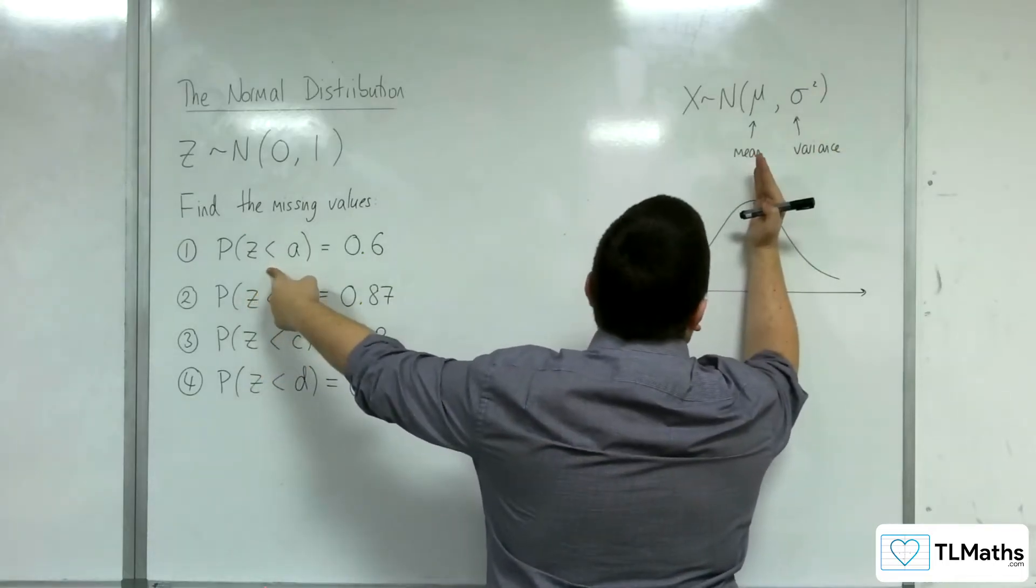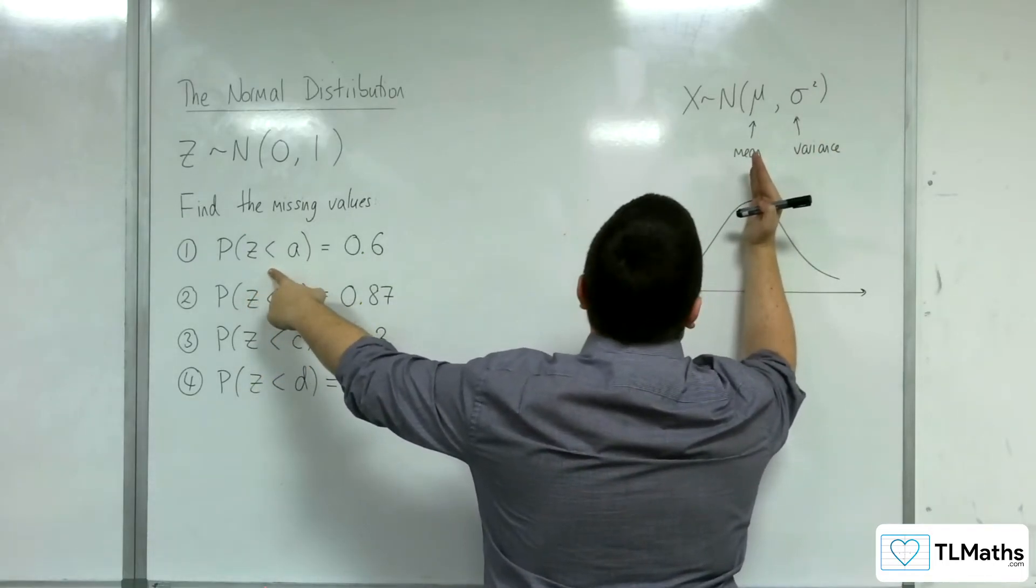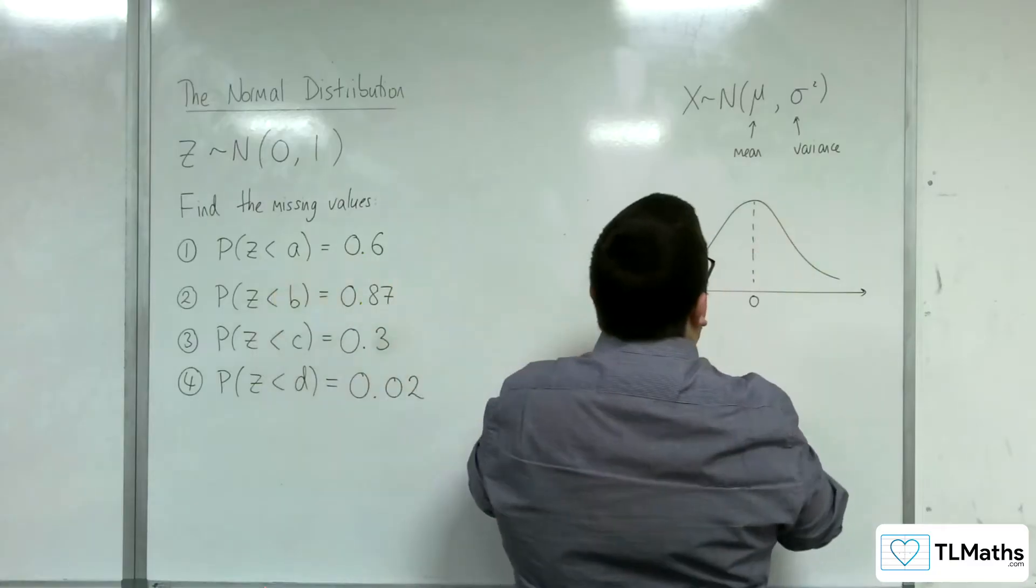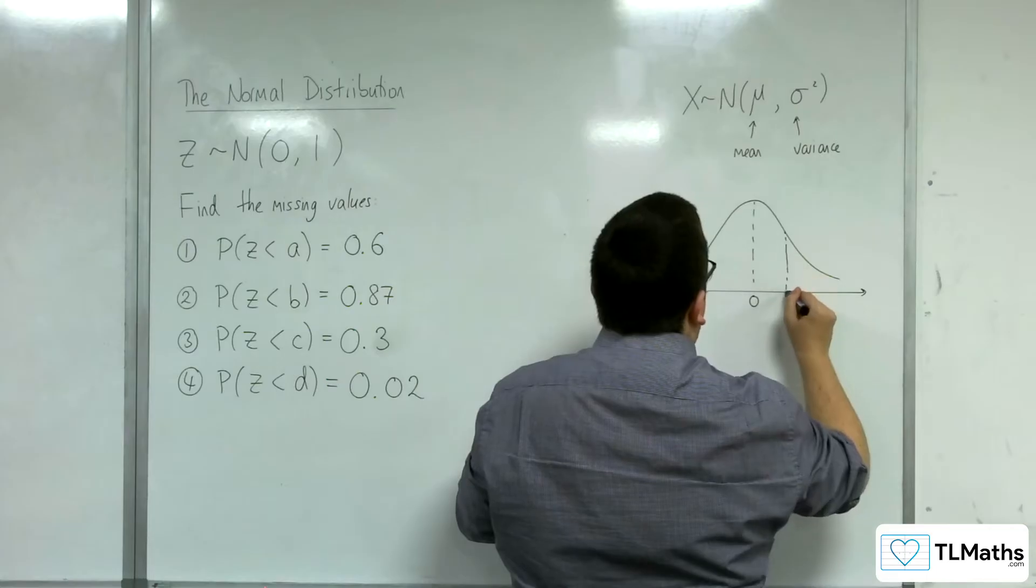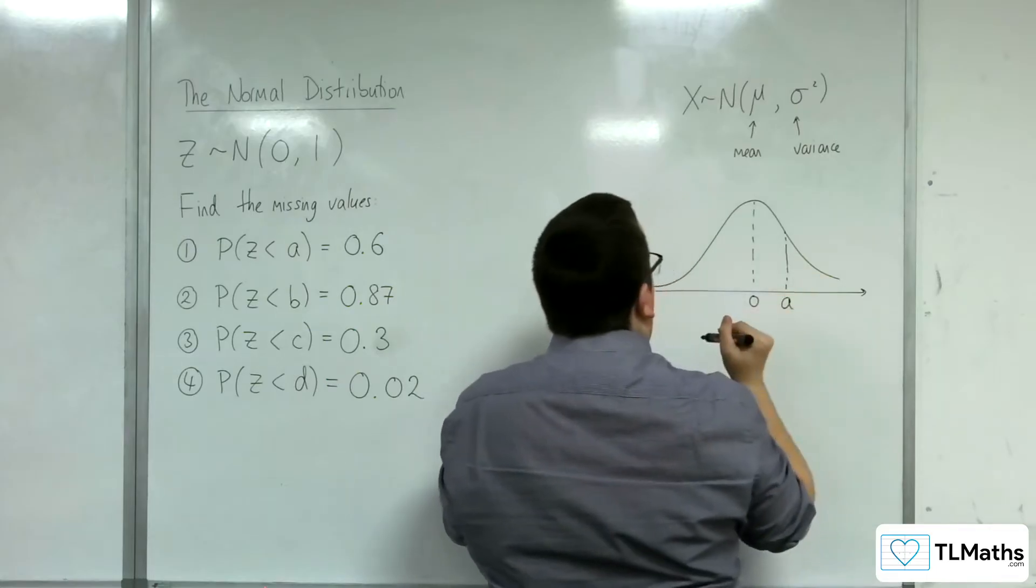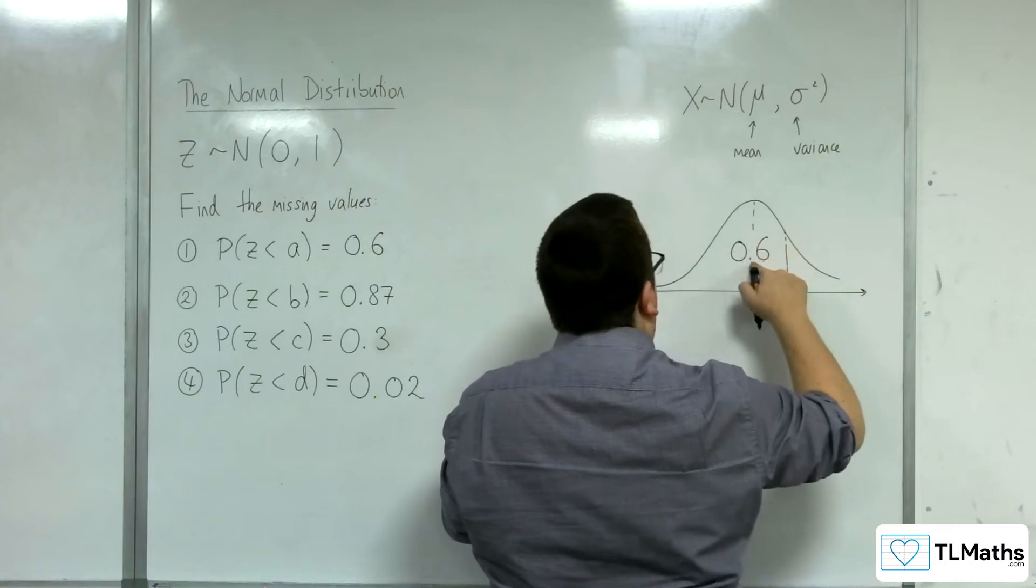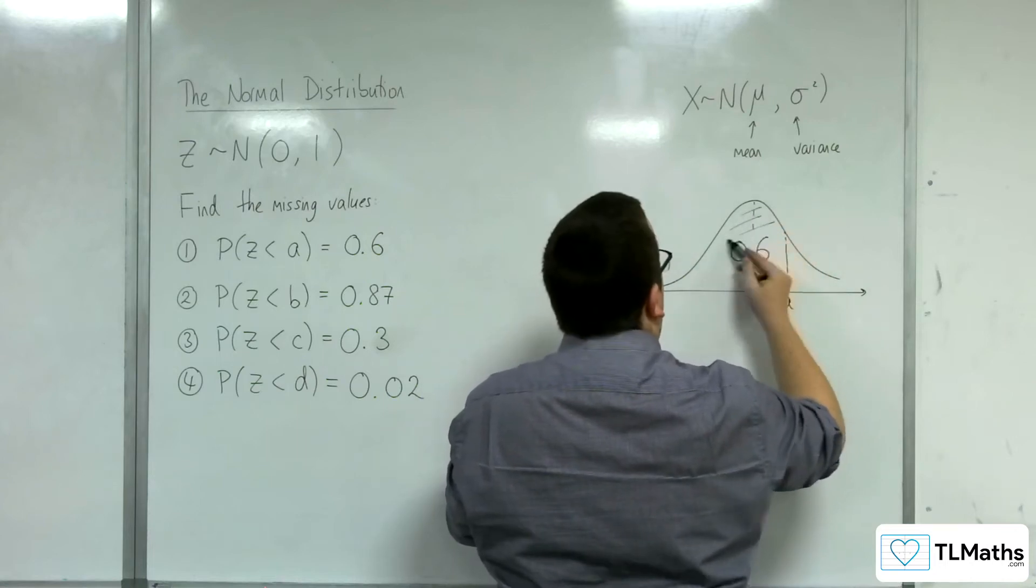So, if it was slap bang in the middle, then the area to the left is 0.5. So, to be 0.6, it would have to be a little bit to the right. So, I need that value so that this probability is 0.6, this shaded region here.